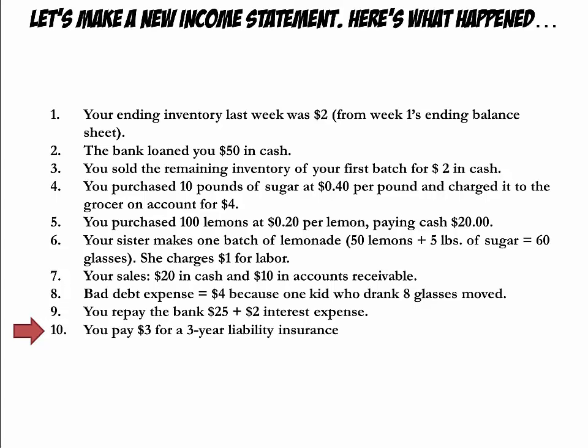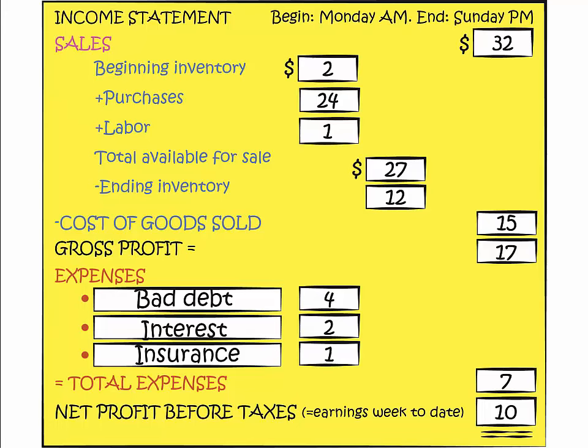Finally, you paid $3 for a 3-year liability insurance. The need to have insurance is a consequence of doing business, so it's definitely a business expense. But we should not expense all $3 now because it would misrepresent your net profits for this accounting period. Therefore, we will only expense the first year of the insurance now. The second $1 will be expensed in year two, and the final $1 in year three. This finalizes our income statement. We had a gross profit of $17, and when we take into account expenses of $7 — including bad debt expense, interest, and insurance — this leaves a net profit of $10 for Week 2.